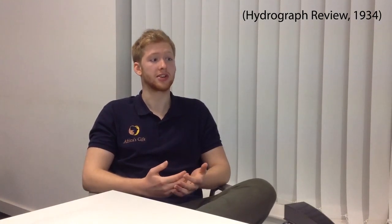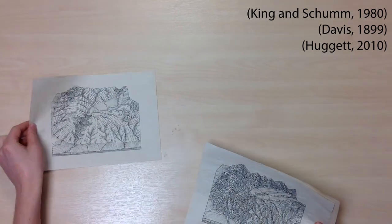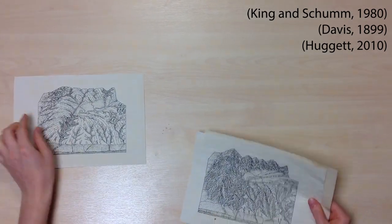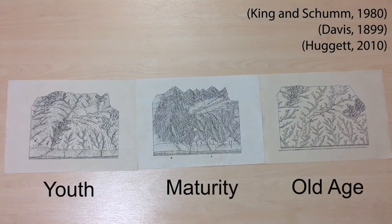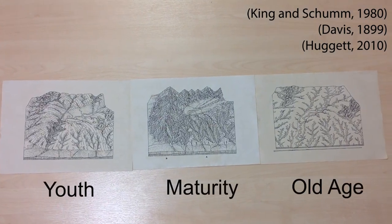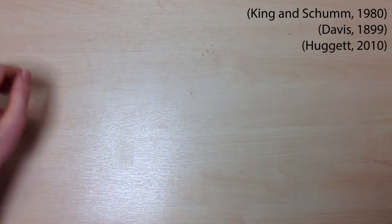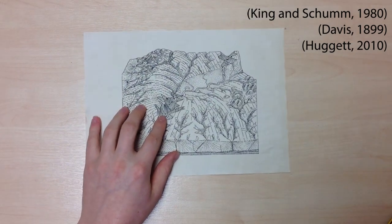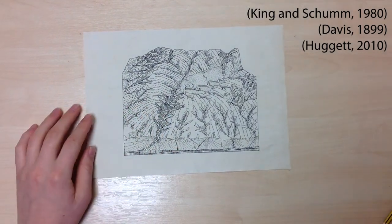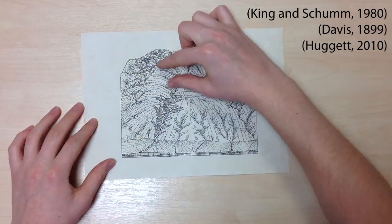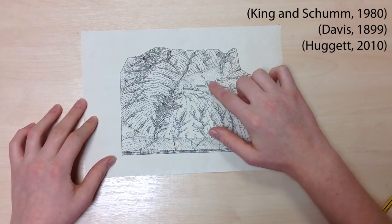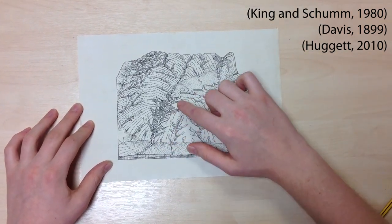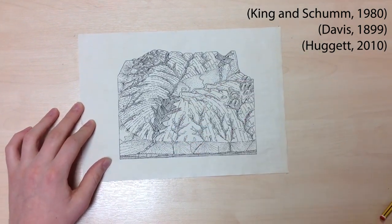I've put together a short video to help explain this theory to you. The cycle of erosion defines landscapes into three stages: youth, maturity, and old age, within an erosional cycle. Firstly, tectonic activity creates uplift and initiates the cycle. This produces mountainous young landscapes that are subsequently eroded sharply by torrential streams. Destructive processes have little impact at this stage.